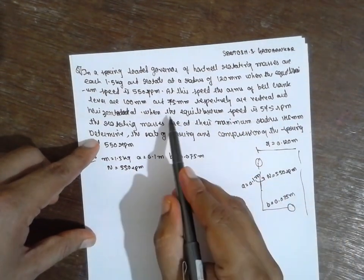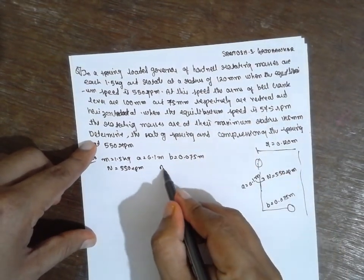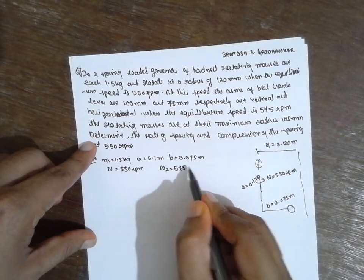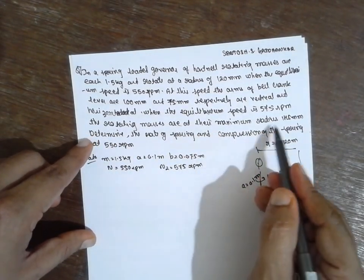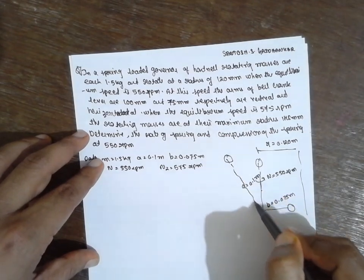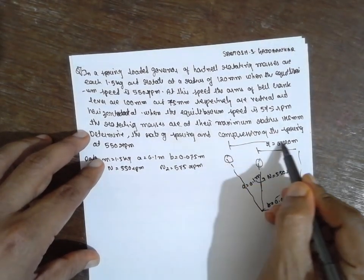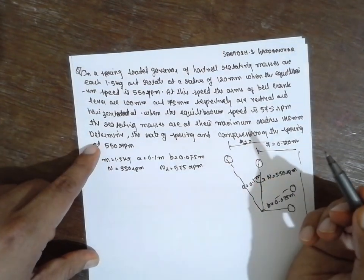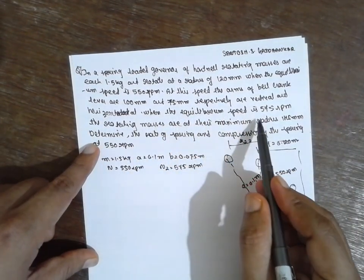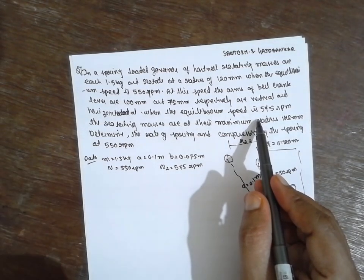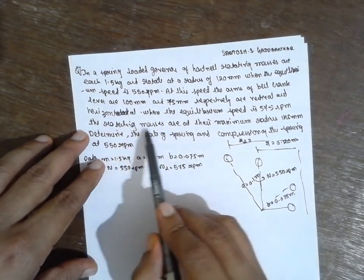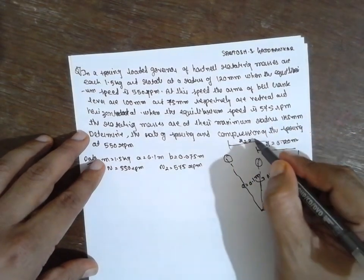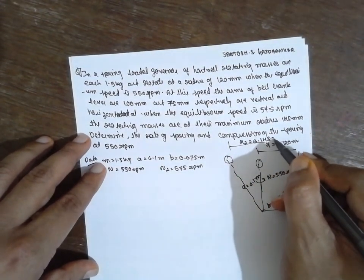When the equilibrium speed increases, N2 is equal to 574 RPM. The rotating mass and maximum radius R2 are also given. The maximum radius R2 is 145 mm, which in meters is 0.145 meter.